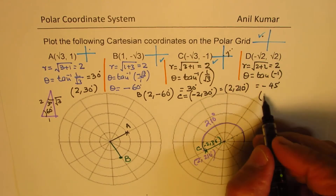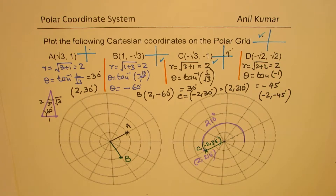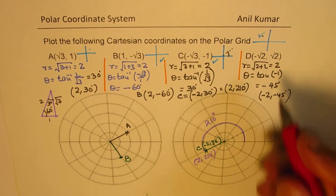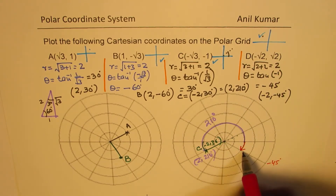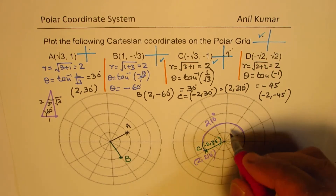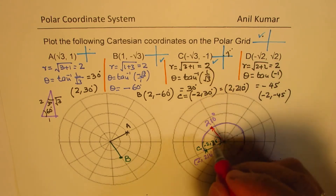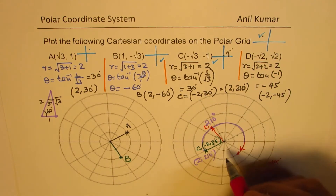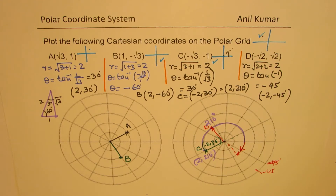Since we are in quadrant 2, we can take r as -2 and theta as -45 degrees. Plotting: go to -45 degrees, but since r = -2, we point in the opposite direction — so the point ends up in quadrant 2. That is point D for us, which corresponds to the original coordinate (-√2, √2).